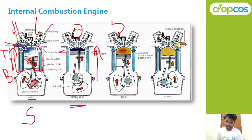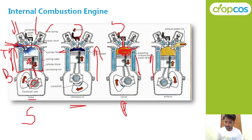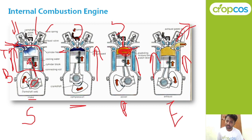In the third stroke, an explosion occurs inside the cylinder with the help of a spark plug, which ignites the mixture. The piston moves downward — this is called the power stroke. In the fourth stroke, the burnt gases are removed through the outlet valve as the piston moves upward — this is called the exhaust stroke. The removal of burnt gases through the outlet valve is called scavenging.